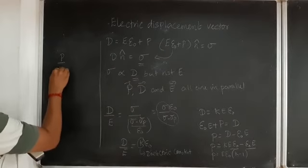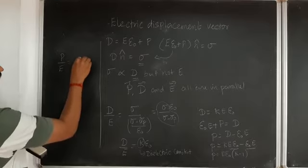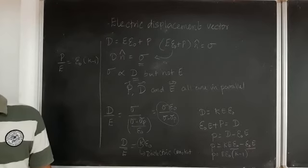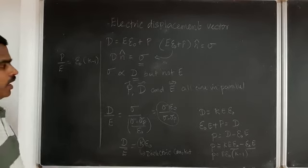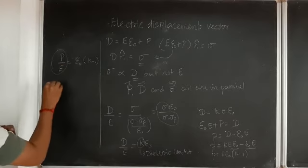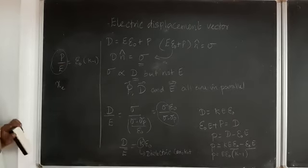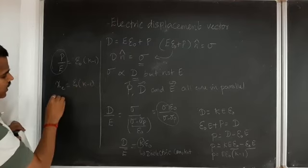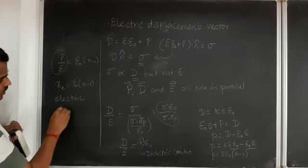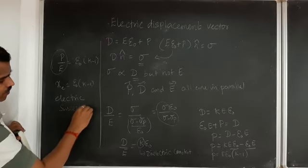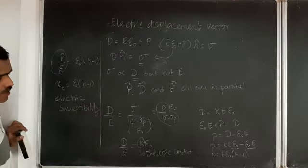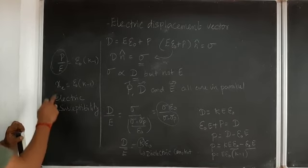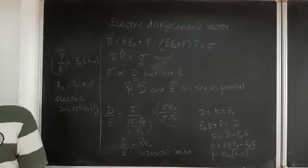So P/E = (K minus 1)·ε. This quantity P/E is called the electric susceptibility, χ_E = K minus 1. This is one of the characteristics of the given dielectric — the electric susceptibility, χ_E = K minus 1.